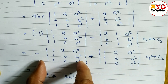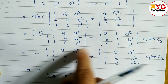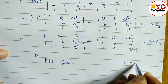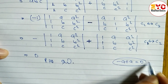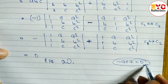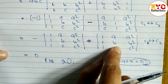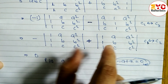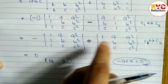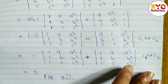Both matrices are now the same — one positive and one negative — so they cancel. Minus a plus a equals zero. Both matrices are identical with opposite signs, so the result is zero. RHS proved.